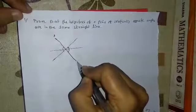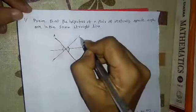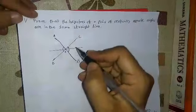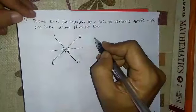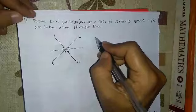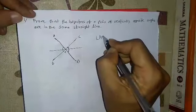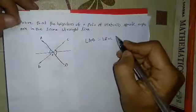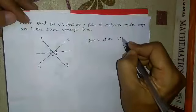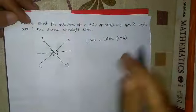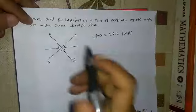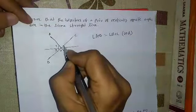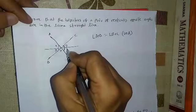Suppose this line is AB and CD. If the angle AOD is equal to angle BOC — these are vertical opposite angles. Suppose this angle is 1, its name is 2, and this is 3, then it is 4.